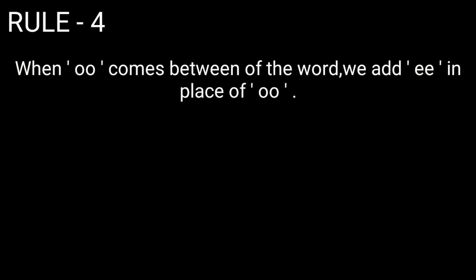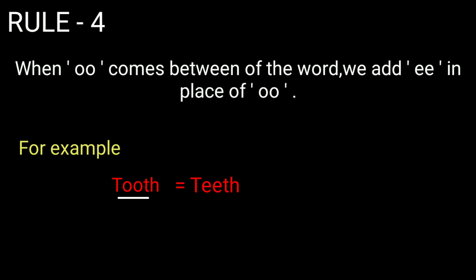Rule four: when you find double 'o' in the middle of a word, replace it with double 'e' to make the plural form. For example, tooth becomes teeth, foot becomes feet, and goose becomes geese.